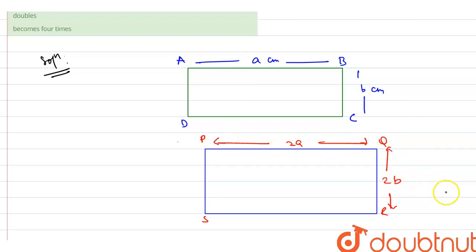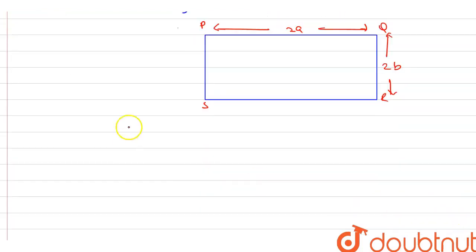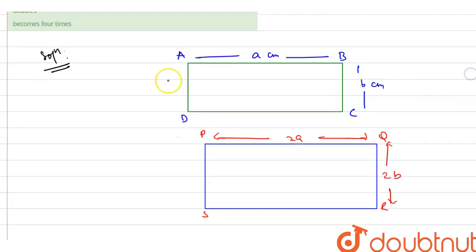So now, first of all, we will try to find the area of rectangle. And just try to find here guys. For this rectangle, what will be the area? As we know, area of rectangle is always length into breadth.